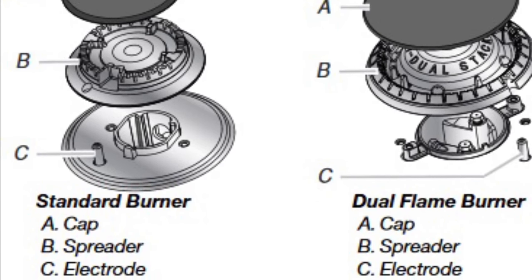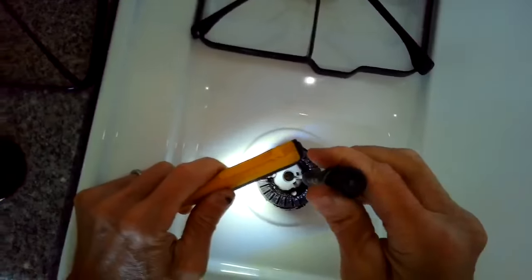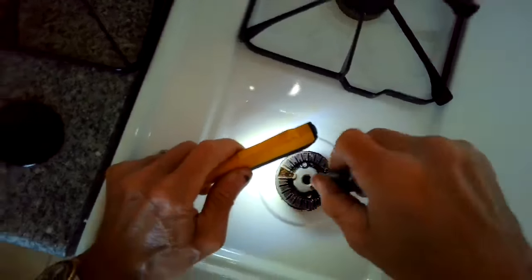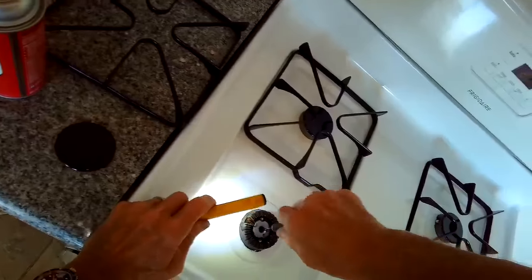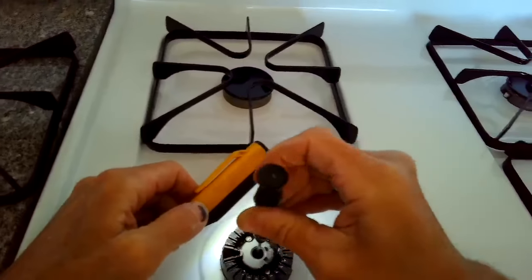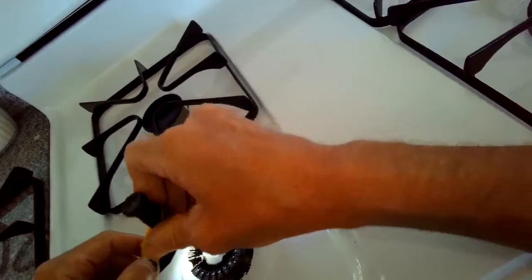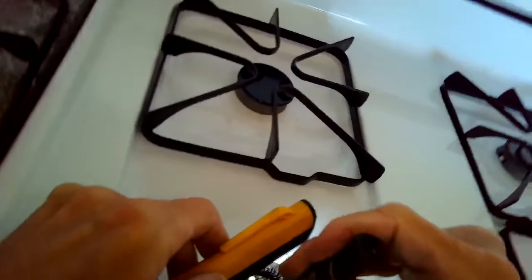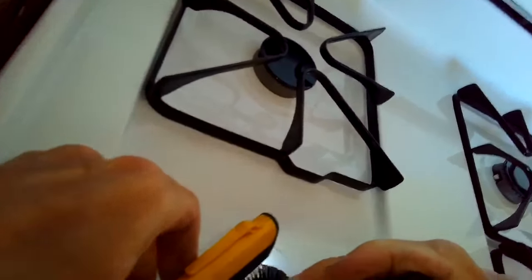Like maybe a straightened out paper clip would work. So reach down inside there, inside that little hole, and we wiggle around the sharp implement so that we can get all the crud out of that gas jet. That helps more gas come out and then it's more likely to light.